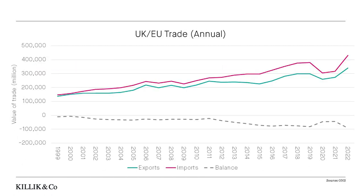We can also look at the value of trade with the EU. Imports are shown in pink and exports are shown in green, and that grey dashed line shows the difference. We import more than we export from the EU, which is bad news when the pound is weak. The end of the Brexit transition period coincided with Covid, so at the moment it's actually quite difficult to separate the impact of Covid on trade from the impact of Brexit, but this is something that will be analysed very closely over the coming few years.